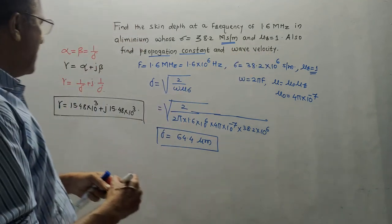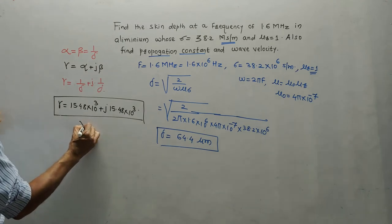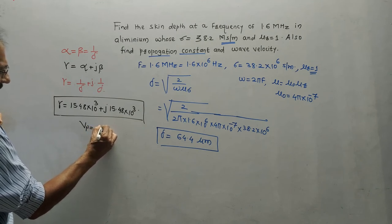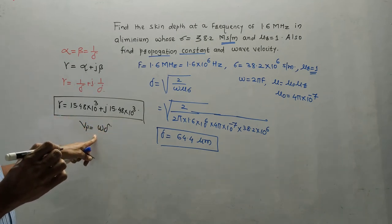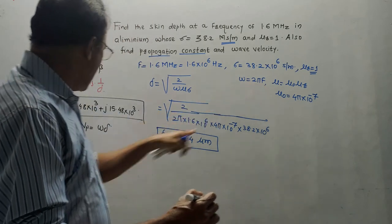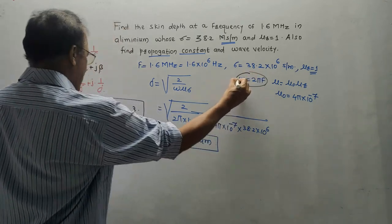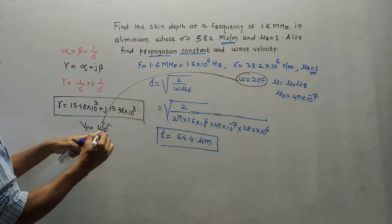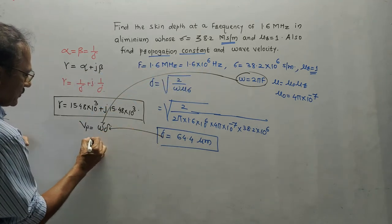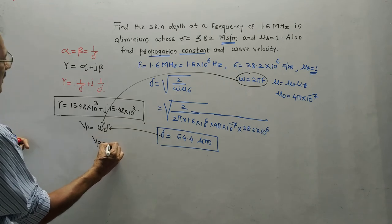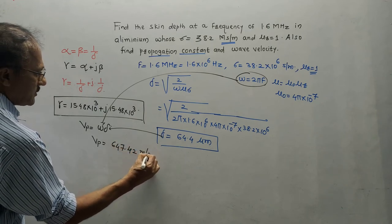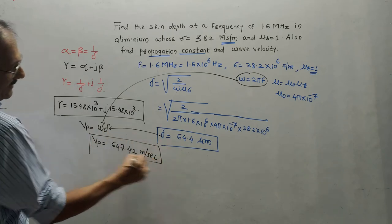For the last part, wave velocity — also known as velocity of propagation — is given as omega divided by beta, or equivalently omega times delta. Omega equals 2 pi f equals 2 pi times 1.6 times 10 raised to 6. Putting in the value of delta and solving on the calculator gives the velocity of propagation vp equals 647.42 meters per second.